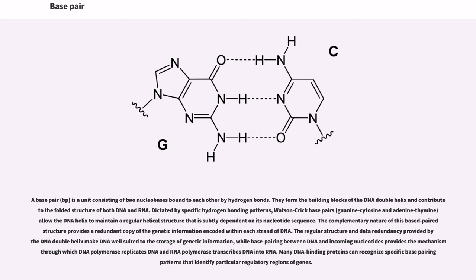The complementary nature of this base-paired structure provides a redundant copy of the genetic information encoded within each strand of DNA. The regular structure and data redundancy provided by the DNA double helix make DNA well-suited to the storage of genetic information, while base pairing between DNA and incoming nucleotides provides the mechanism through which DNA polymerase replicates DNA and RNA polymerase transcribes DNA into RNA. Many DNA-binding proteins can recognize specific base pairing patterns that identify particular regulatory regions of genes.